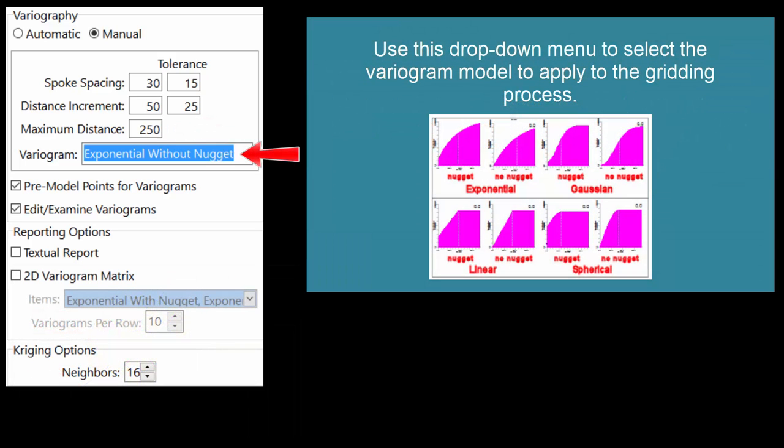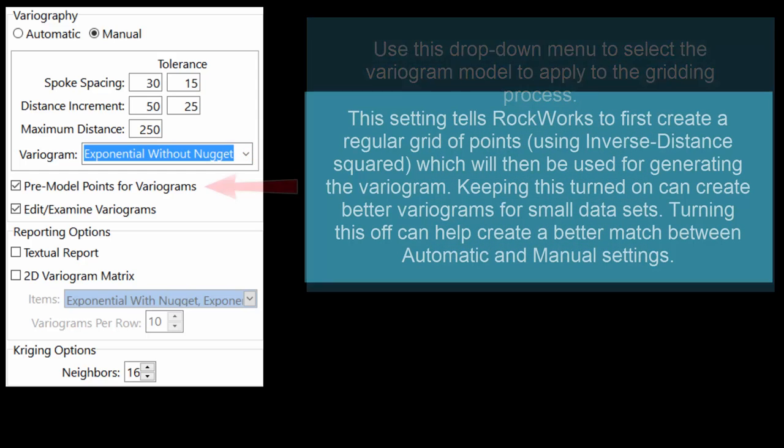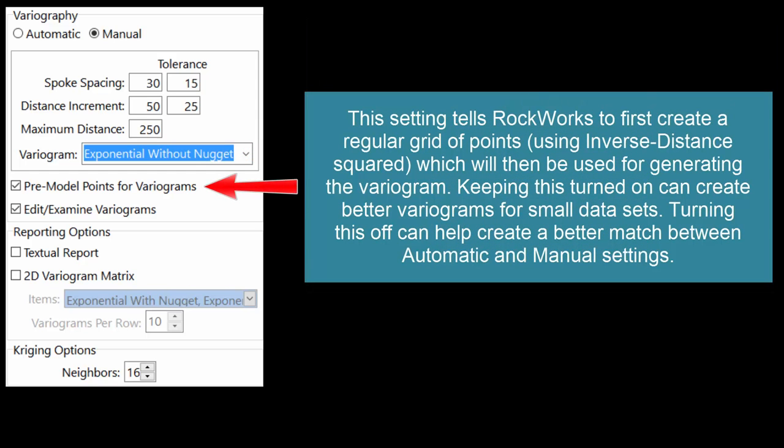Use this drop-down menu to select the variogram model to apply to the gridding process. This setting tells RockWorks to first create a regular grid of points using inverse distance squared, which will then be used for generating the variogram. Keeping this turned on can create better variograms for small data sets. Turning this off can help create a better match between automatic and manual settings.